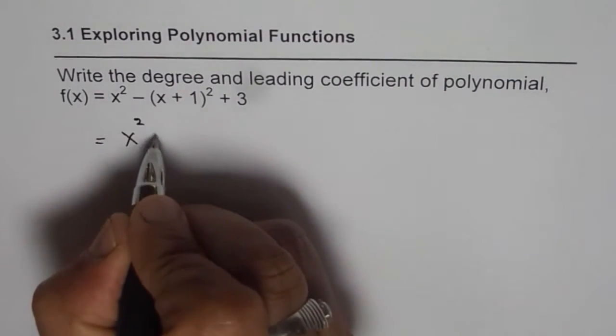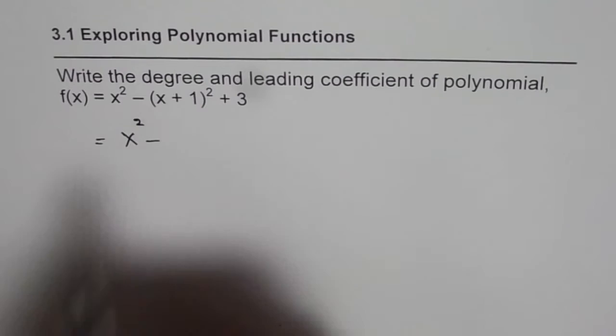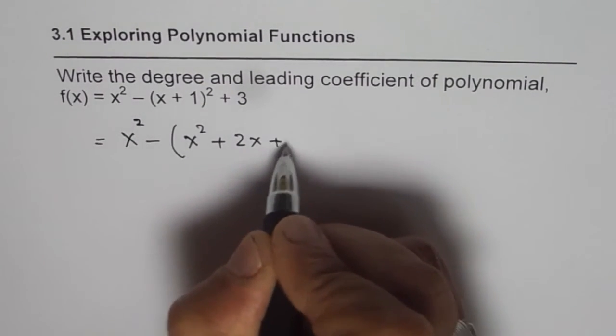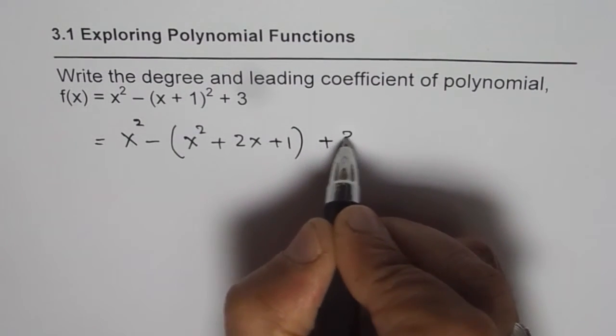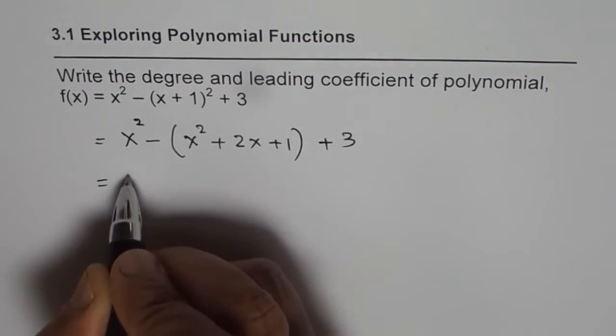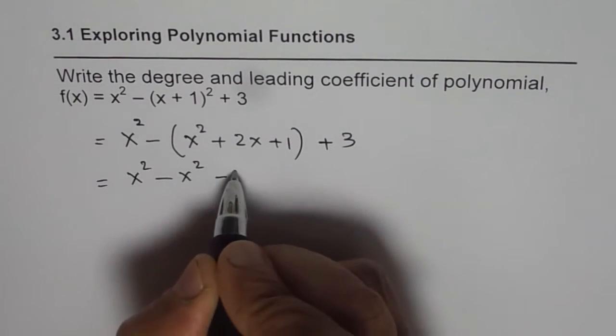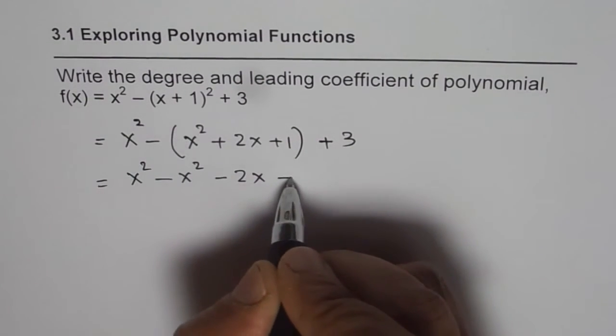So (x+1)² is x² + 2x + 1, and then we get +3. When I open this, I get x² - x² - 2x - 1 + 3.